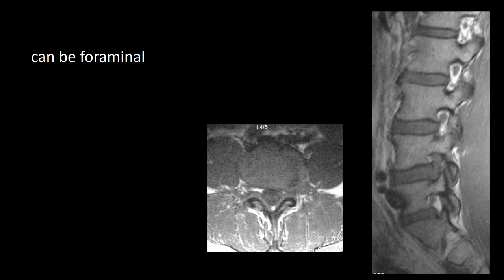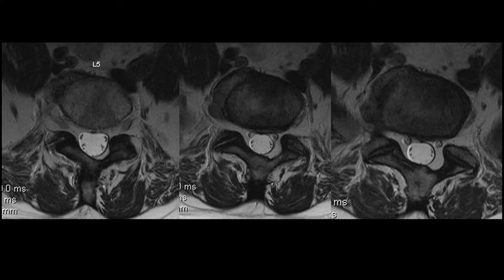The disc herniation may not be paracentral but in the foramen, as demonstrated here on the left at L4-5. On the sagittal view one can see the loss of the hyperintense signal of fat with a nerve root compressed up by the disc under the pedicle. Here is an example of an L5-S1 level with a right-sided extra-foraminal disc sequestration. The L5 nerve root exits the L5-S1 foramen on the right and as it goes round anteriorly is irritated by this disc, causing sciatica.